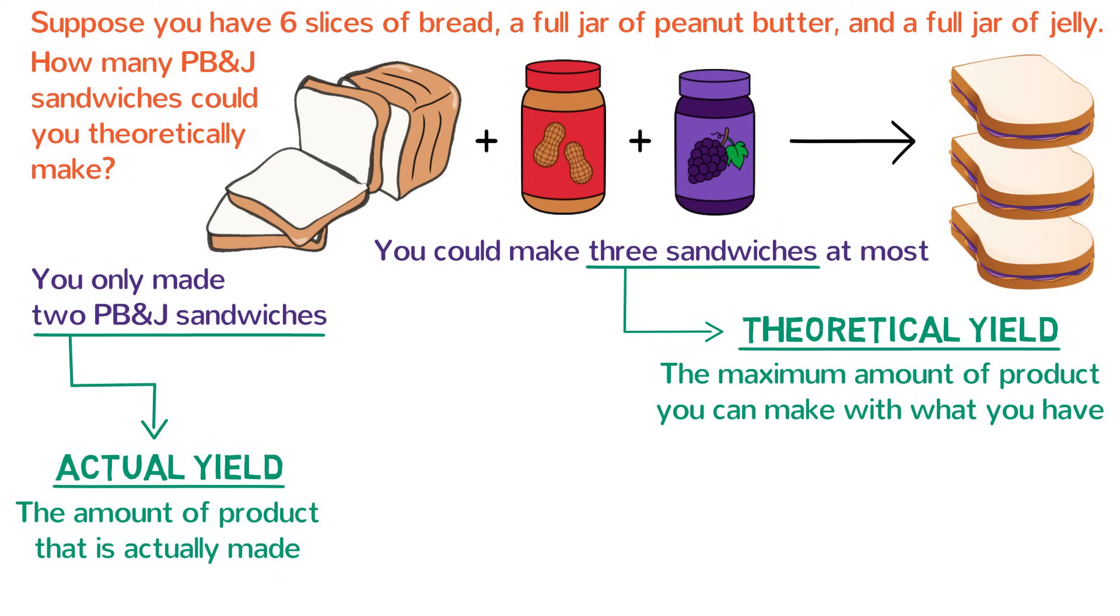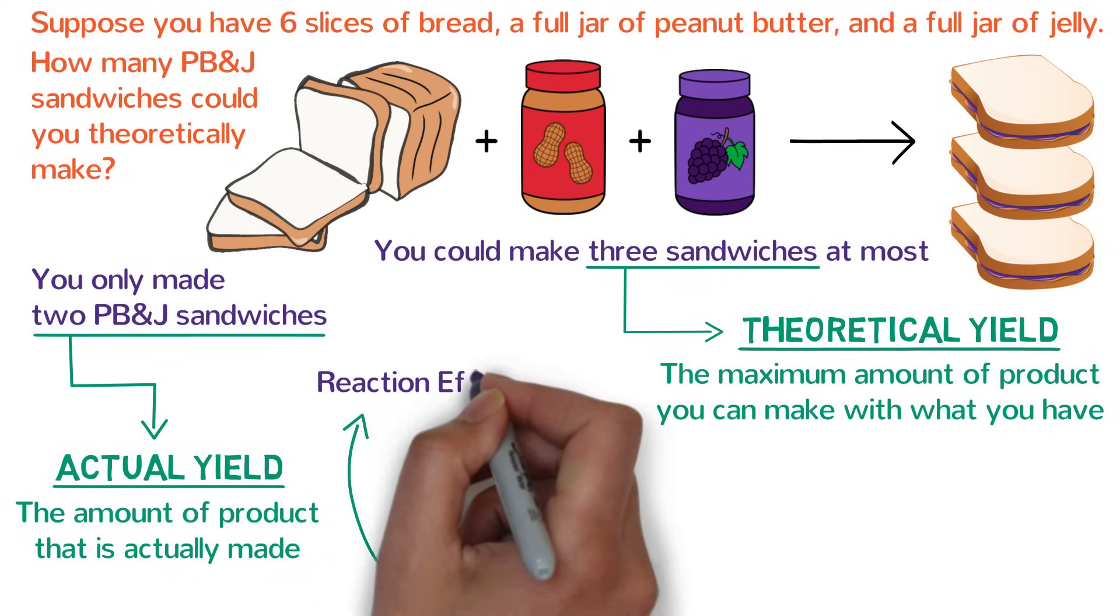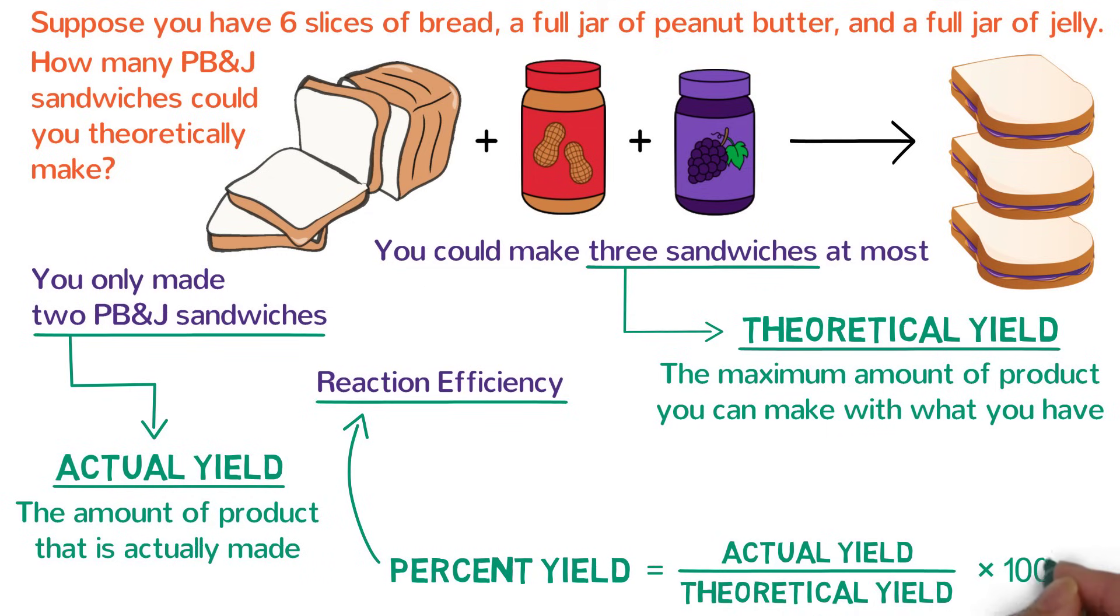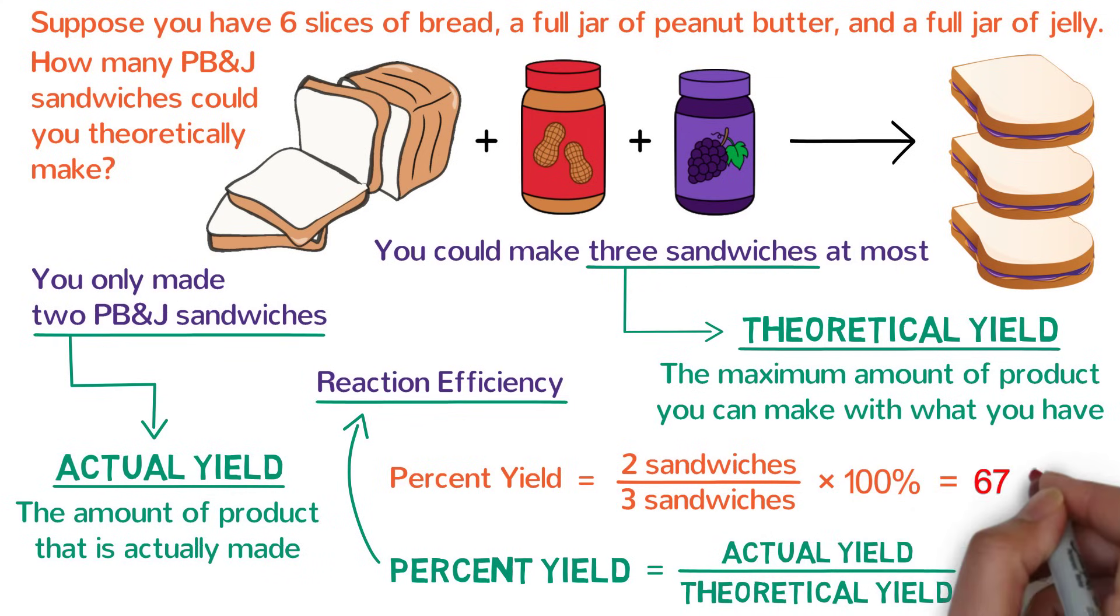Chemists often like to compare the actual and theoretical yields, and they do so by calculating the percent yield, which is more or less a measure of reaction efficiency. The percent yield tells you how well your reaction worked. It is defined as the actual yield divided by the theoretical yield, all multiplied by 100 in order to convert it to a percentage. We can calculate the percent yield of our peanut butter and jelly sandwiches by dividing the actual yield of two sandwiches by the theoretical yield of three sandwiches. After multiplying that by 100, we see that the percent yield of this experiment is 67%.